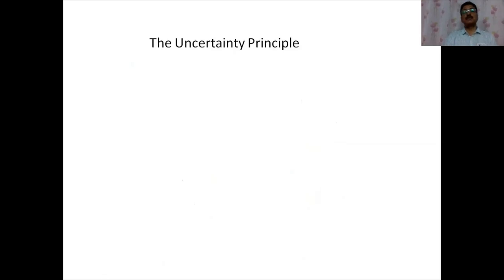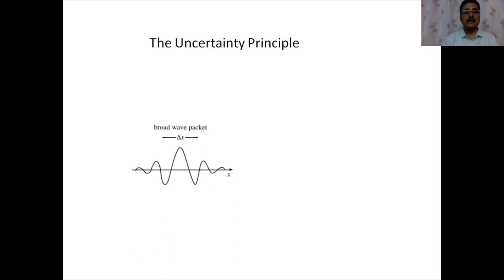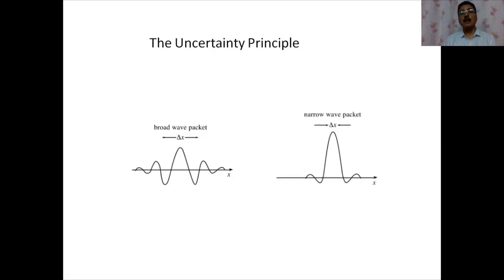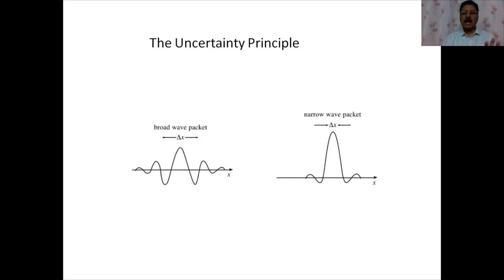By associating a wave with a moving particle, we make the localization of the particle uncertain to at least the extent of the wave packet's stretch. With a broad wave packet it is easier to estimate the wavelength but the particle's location becomes uncertain. With a narrow wave packet the location is easier to determine but finding the wavelength becomes difficult. This introduces the uncertainty principle; a separate lecture on this is already uploaded on YouTube.